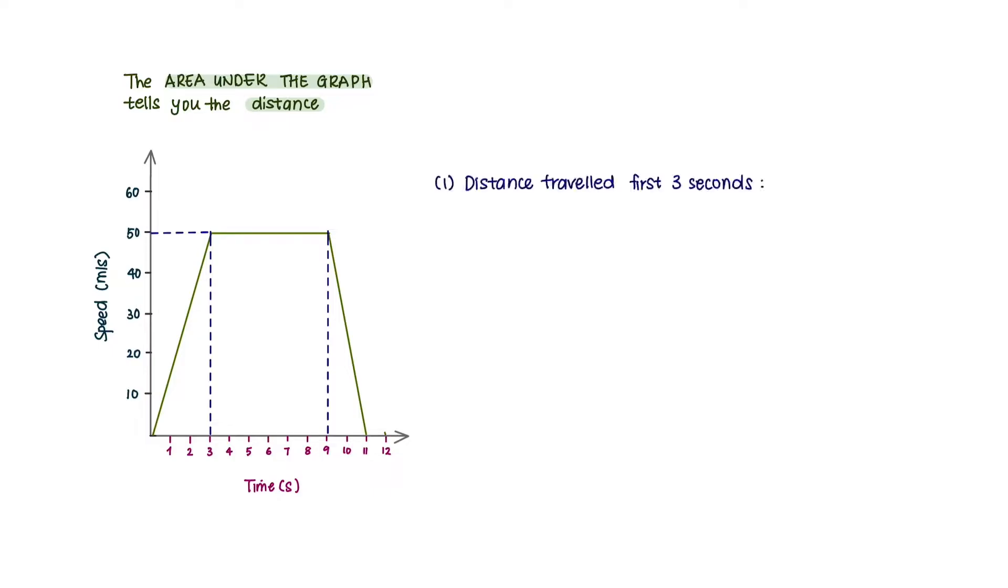For example, the distance traveled for the first three seconds is the area of this triangle, and you will obtain 75 meters. The second part is the shape of a rectangle.